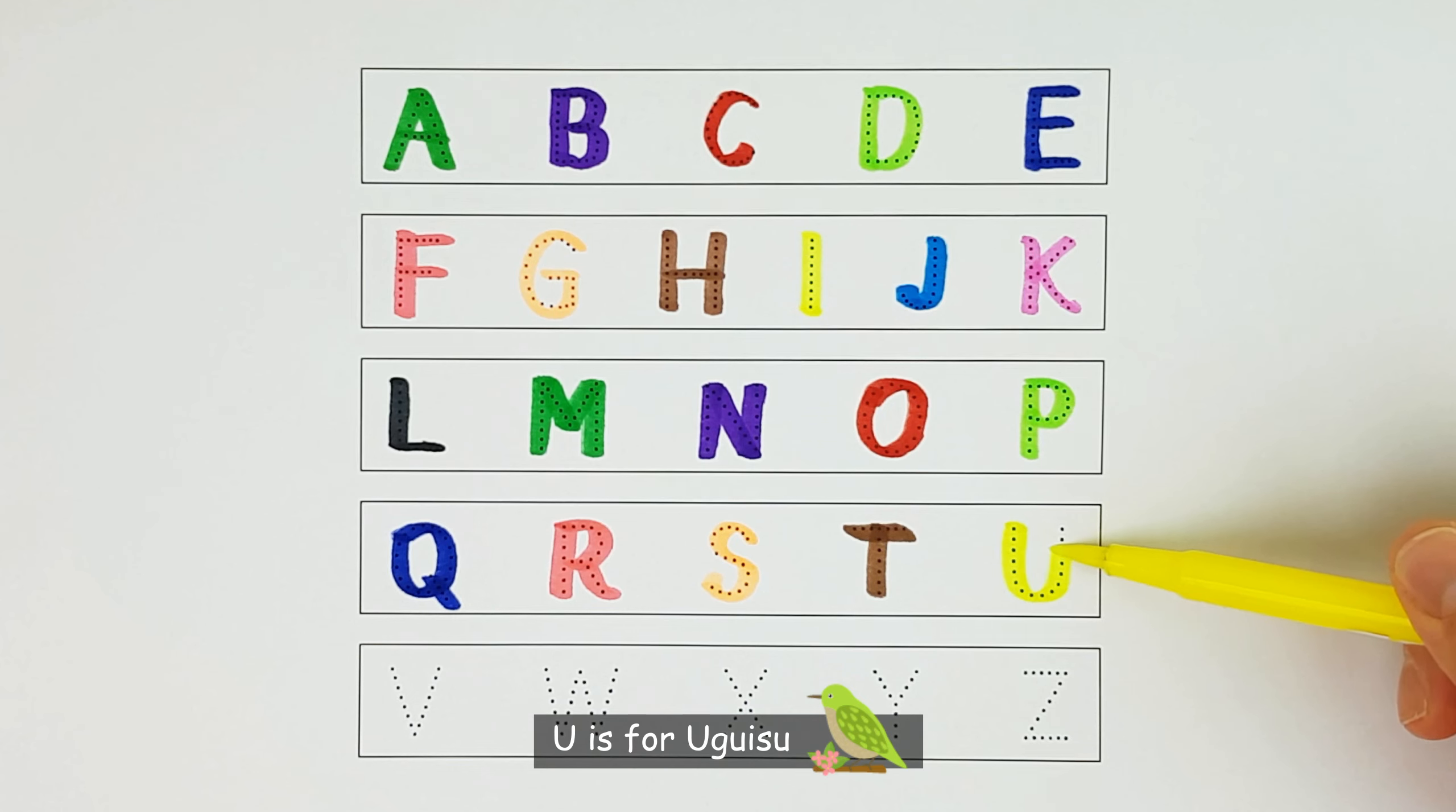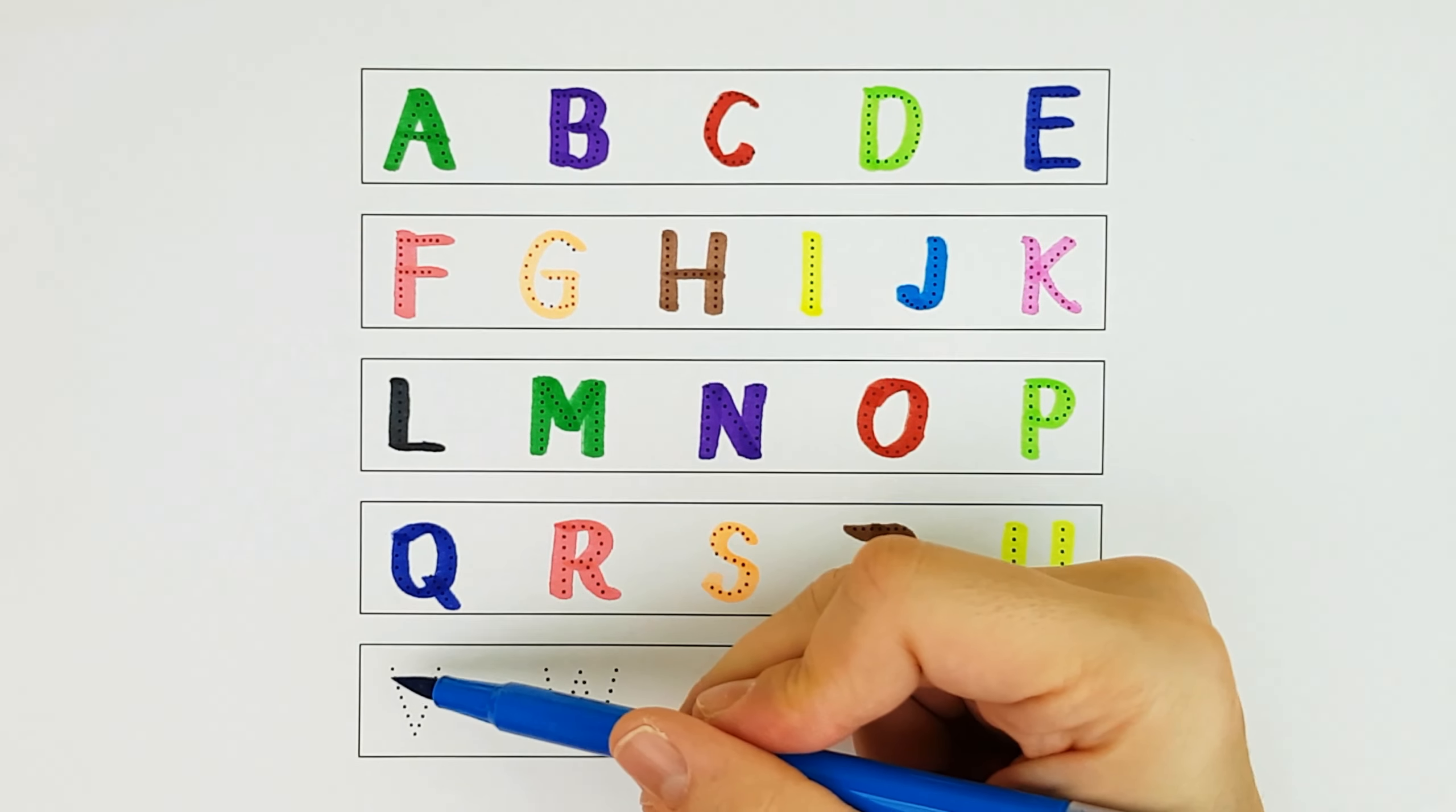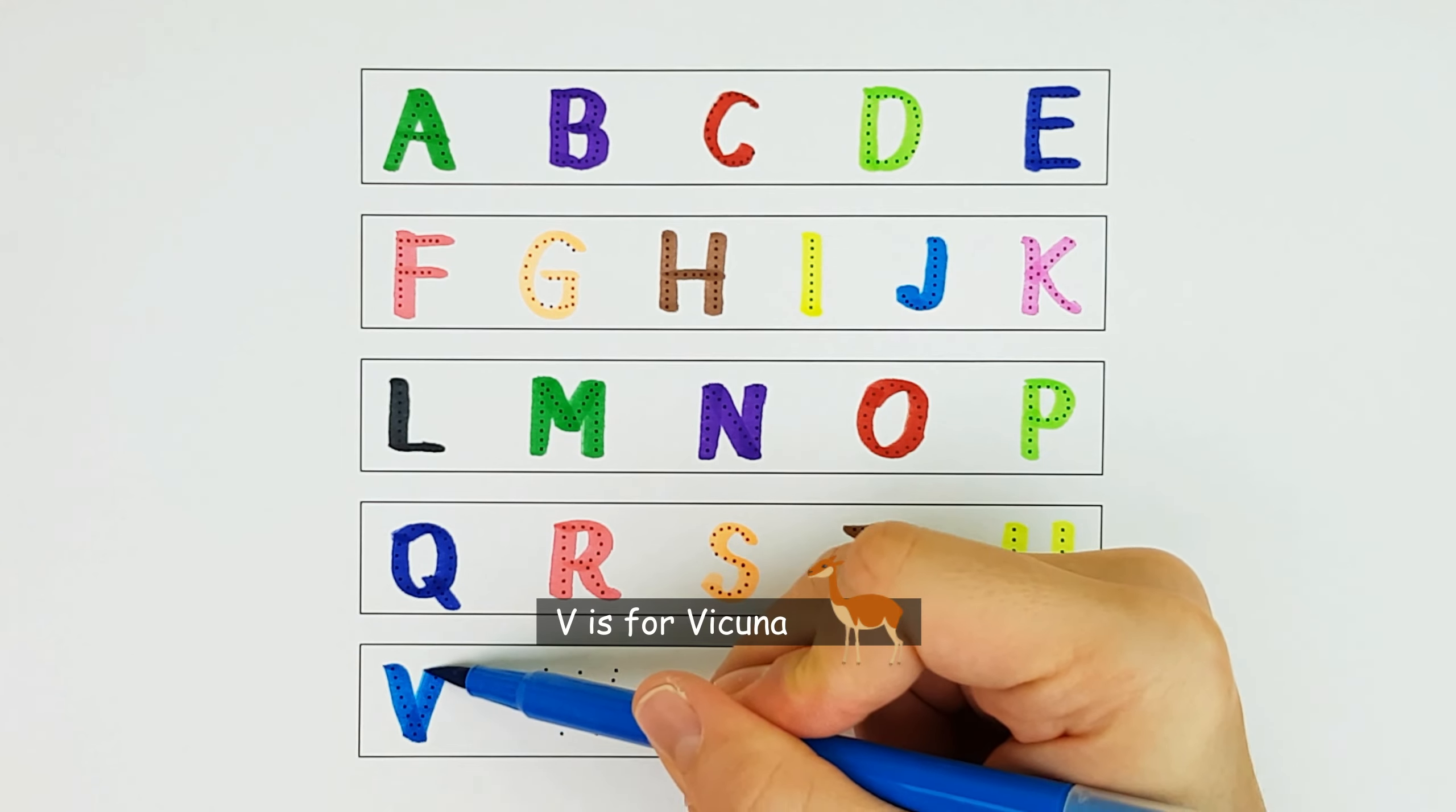U. U is for urchin. U. V. V is for vicuna.